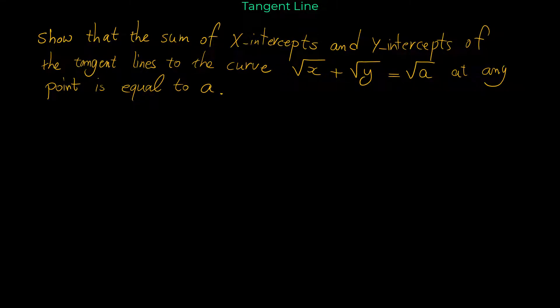In this video, I'm going to show you how we can use implicit differentiation for finding the equation of a tangent line to an implicit relation. We need to show that the sum of x-intercepts and y-intercepts of the tangent lines to the curve √x + √y = √a at any point on the curve is equal to a.